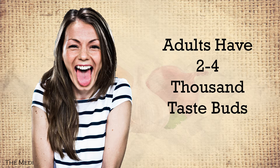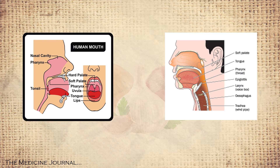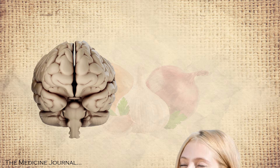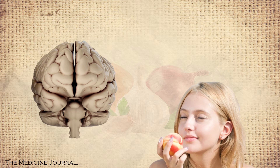Most adults have around 2,000 to 4,000 taste buds. While most people think they reside only on your tongue, they're also found in the back of your throat, epiglottis, nasal cavity, and the upper part of your esophagus. One sense your brain uses to help in taste perception is smell.